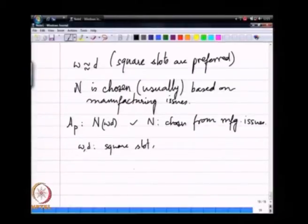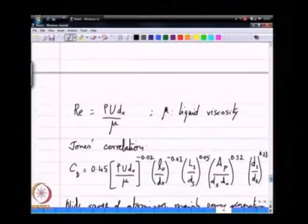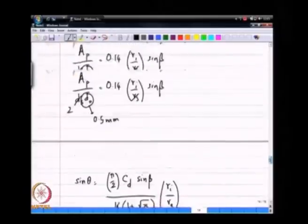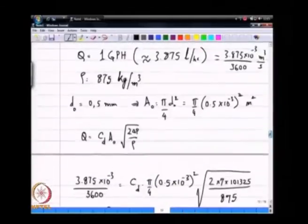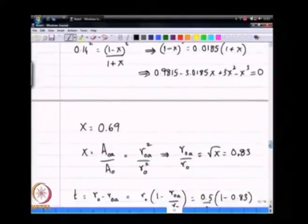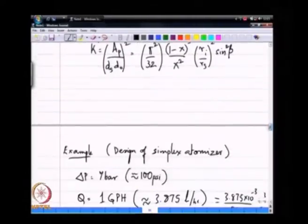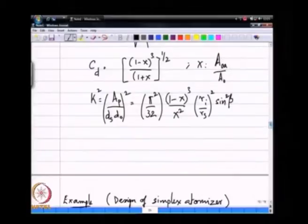Having determined n I can find w and d from the fact that I need a square slot. I can find ri and rs. If you go back to most of the correlations that we had for cd and k, you have this ratio ri over rs that occurs many times over.